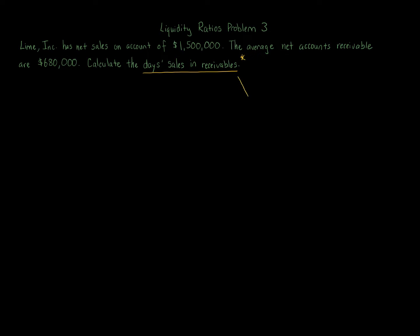The formula for days sales in receivables is 365 days over the accounts receivable turnover ratio — abbreviated ARTR. This is one of those ratios where you have to do another ratio calculation first in order to get the final answer. So we do a preliminary calculation, the ARTR, before arriving at our days sales in receivables answer of 365 divided by the ARTR.